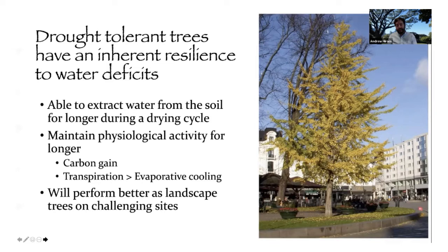Drought-tolerant trees have inherent resilience to water deficits — they're able to extract water from the soil for longer during the drying cycle and maintain physiological activity, including things like carbon gain and transpiration, which relates to evaporative cooling. Ultimately these trees will perform better as landscape trees on the most challenging sites.